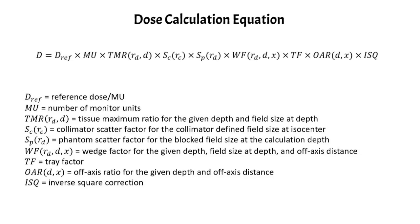SCRC is your collimator scatter factor defined at the isocenter. SP is your phantom scatter factor for the blocked field size defined at the depth of calculation. You have your wedge factor, which is a function of the given depth.